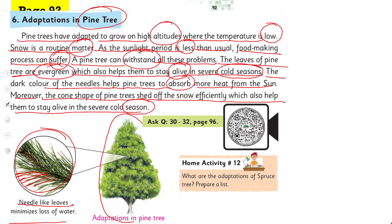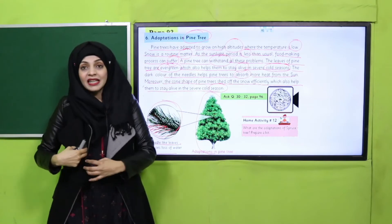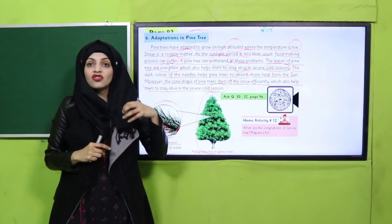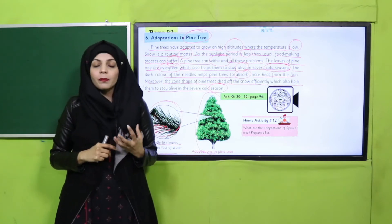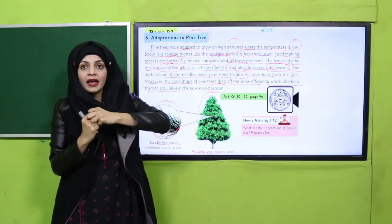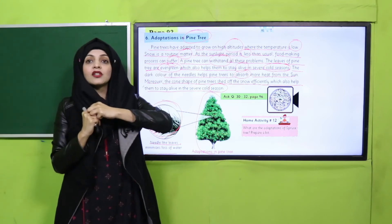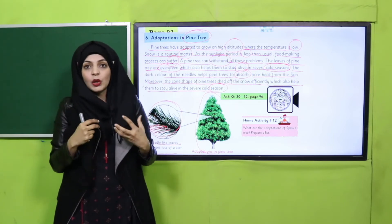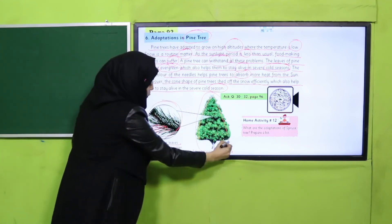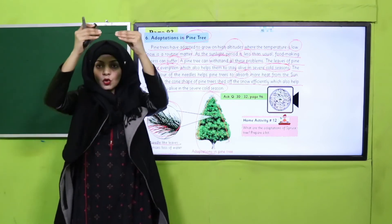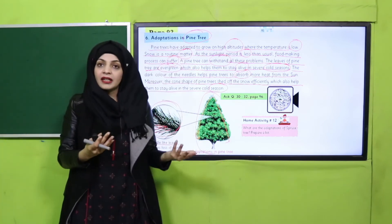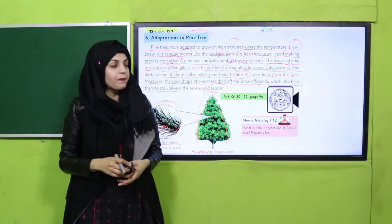No matter how cold it is, pine trees remain green — their leaves never turn brown and they don't shed. Because they stay green, they can absorb all available sunlight. Their dark green color means photosynthesis continues at the same rate both in summer and winter. Their cone shape — narrow at the top and wider at the bottom — helps snow slide off easily, so the tree survives in extreme cold weather.